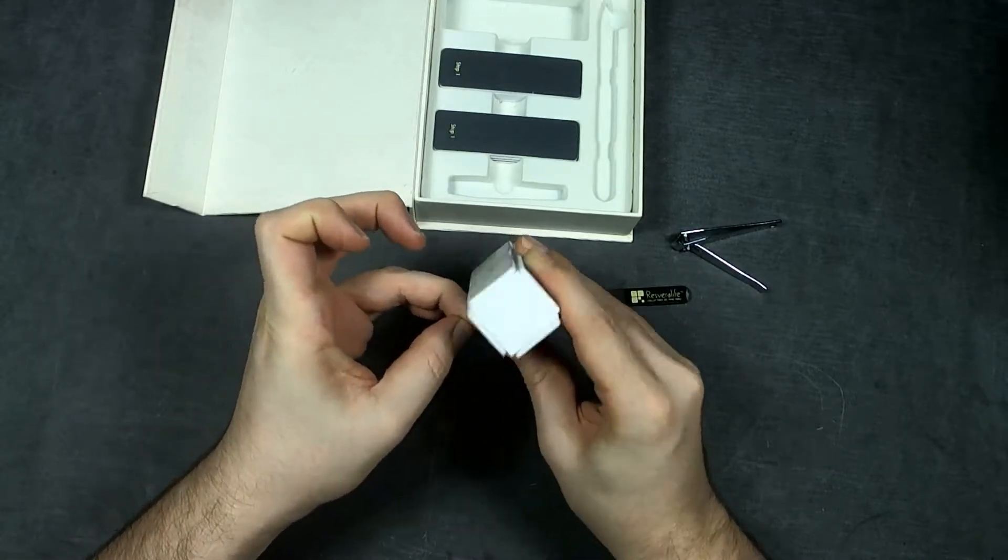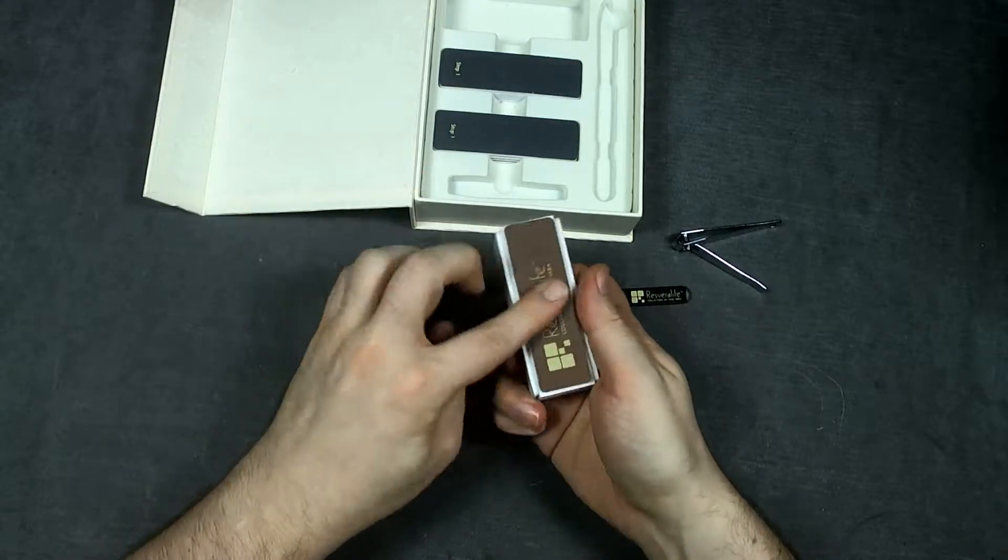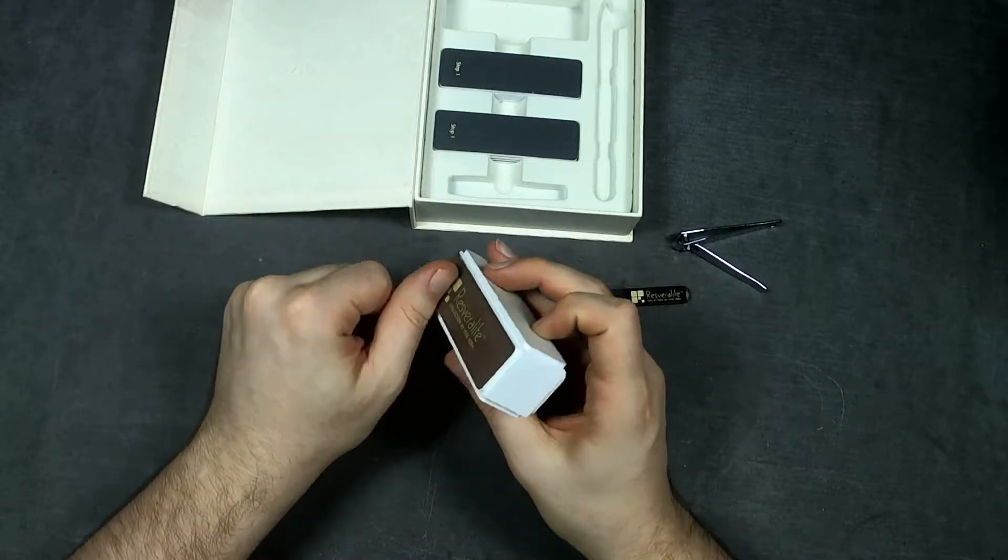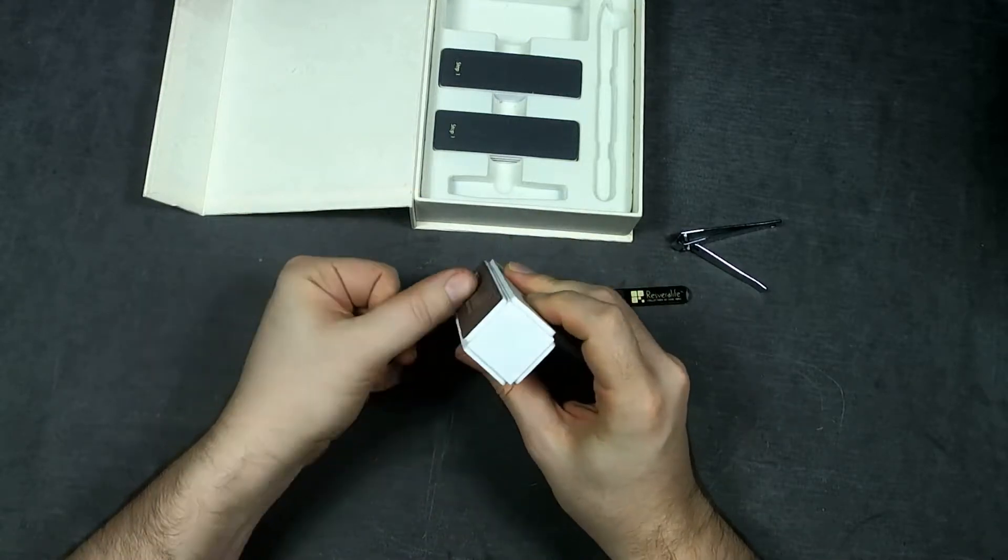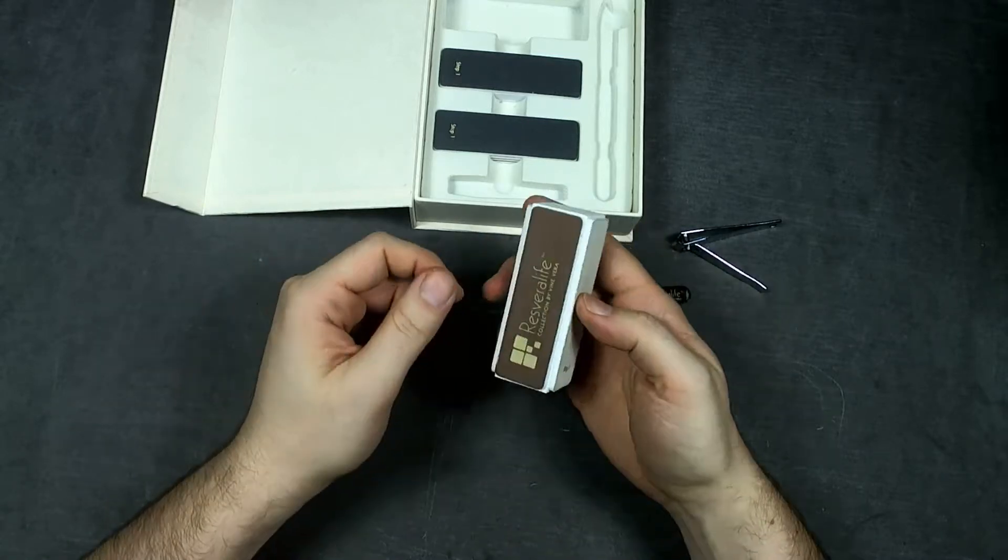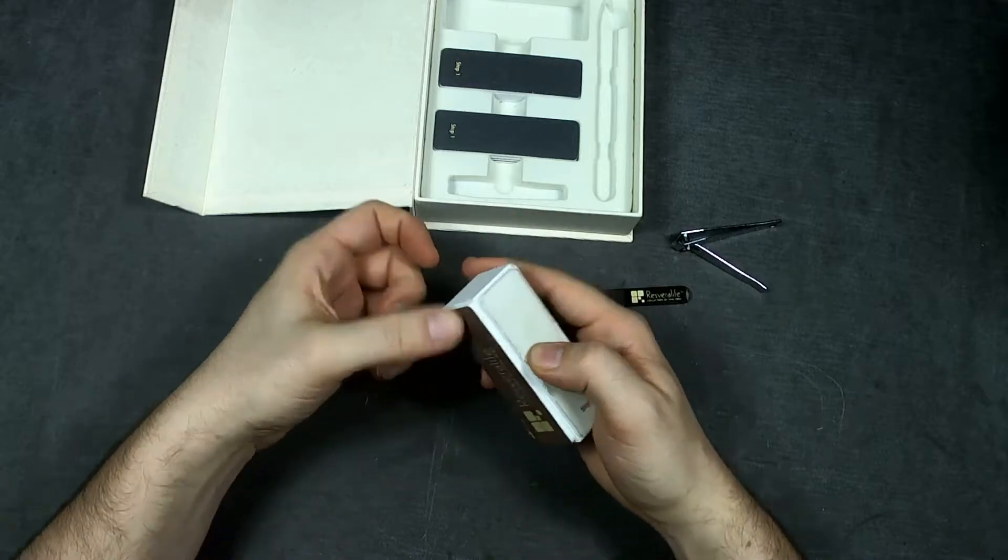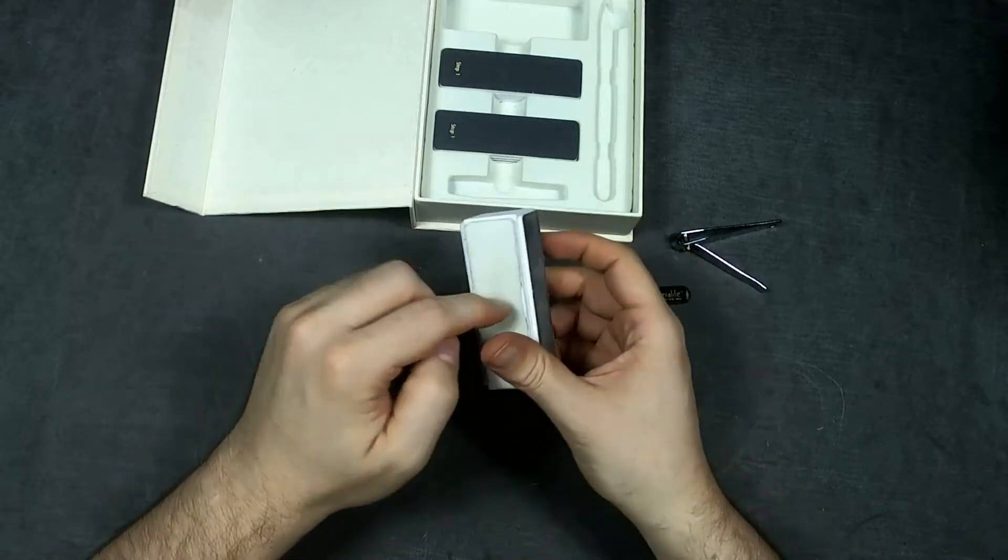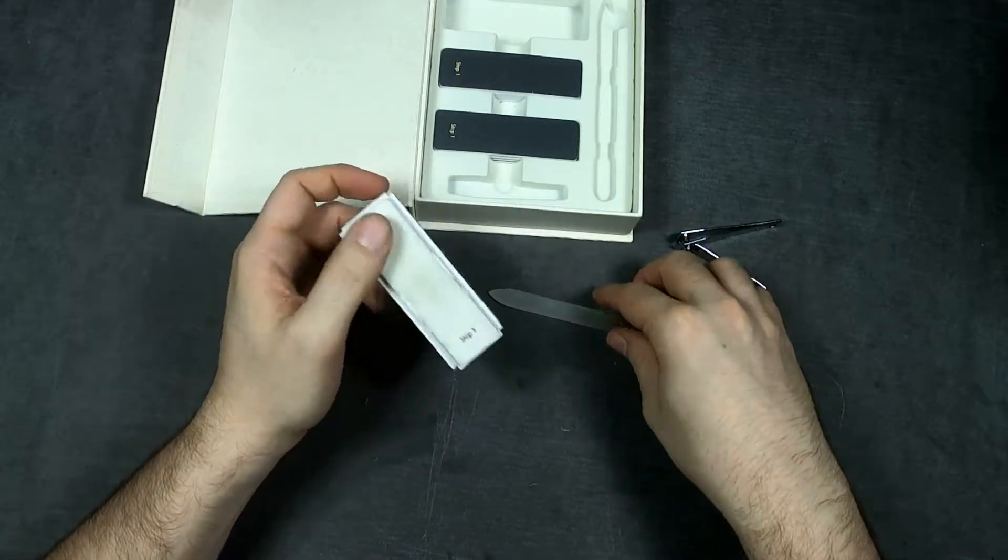Now if you want to make them super shiny you can go ahead and use the second one. Just make sure that you're always filing in a motion like this. You don't want to go like this because it will tear up the pads. You don't want to try doing the edge of the nail really with these. Use a file for that or get a finer file.